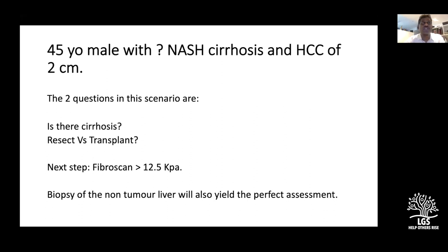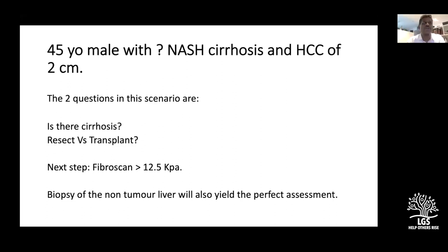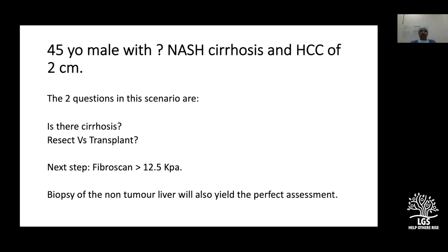For query NASH cirrhosis, the protocol is a fibroscan — 12.5 kilopascals suggests fibrosis. Where fibroscan is unavailable, a biopsy of the non-tumor liver gives the best assessment. The question is whether a two-centimeter HCC warrants resection or transplant given confirmed cirrhosis.